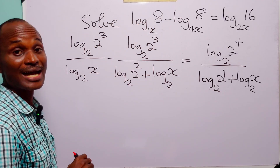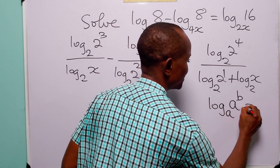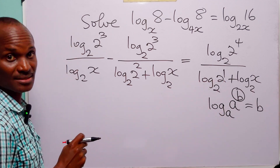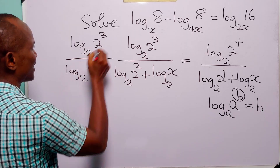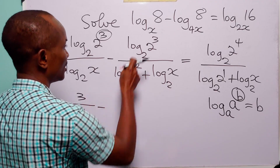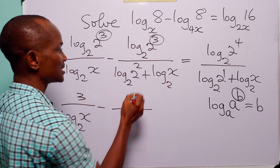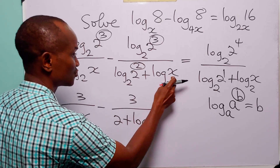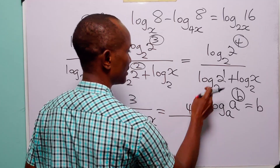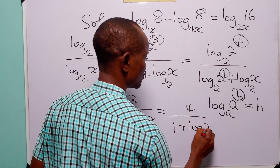At this point we use the identity: log base a of a^b = b. Applying this, log base 2 of 2³ = 3, log base 2 of 2² = 2, and log base 2 of 2¹ = 1. So the equation simplifies to 3 over log base 2 of x, minus 3 over 2 plus log base 2 of x, equals 4 over 1 plus log base 2 of x.